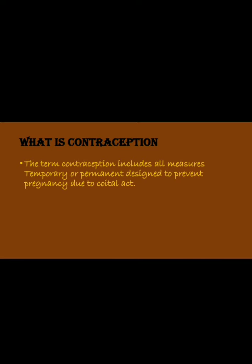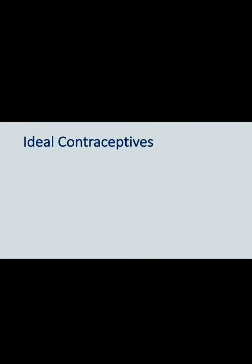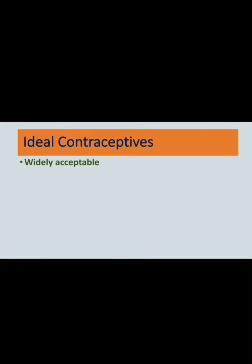The term contraception includes all measures — temporary or permanent — designed to prevent pregnancy resulting from a coital act. What are the ideal contraceptive methods? What are the criteria which they should fulfill? It should be widely acceptable and inexpensive so that everyone can use it. It should be simple to use and highly effective.